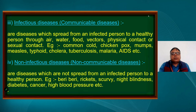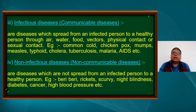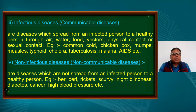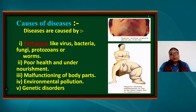There are infectious diseases, which spread from an infected person to a healthy person through air, water, food, vectors, physical contact, or sexual contact. Examples include measles, typhoid, cholera, tuberculosis, and malaria. On the other hand, non-infectious diseases do not spread easily from one person to another — like rickets, scurvy, diabetes, cancer, and hypertension. We discussed that there are many causes of disease, like virus, bacteria, fungi, and protozoa, which are collectively known as pathogens.